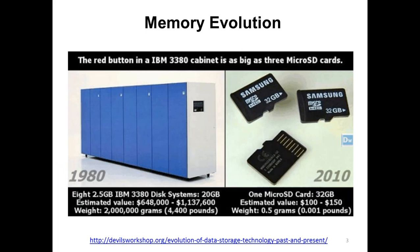Here's some perspective on memory density. Looking at the old IBM 3380 system — about 20 gigabytes of storage — versus today's micro SD cards at 32 gig or more, weighing nothing and costing next to nothing as well. Obviously there's been a big change in the density of memory, meaning the amount of data we can store within a physical amount of space.